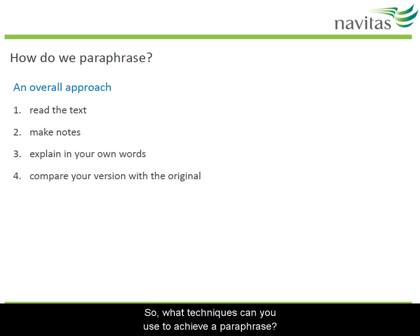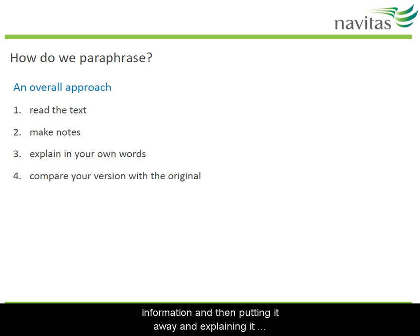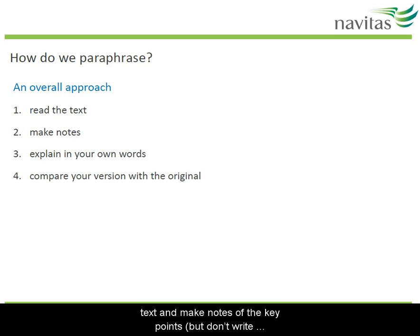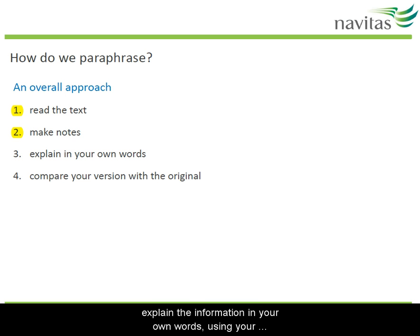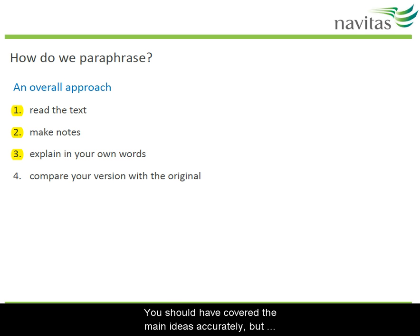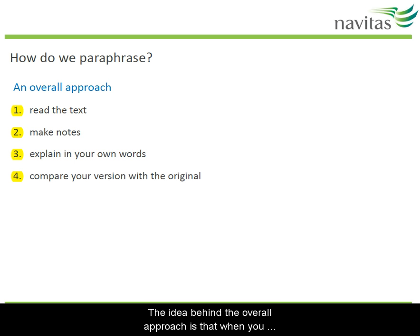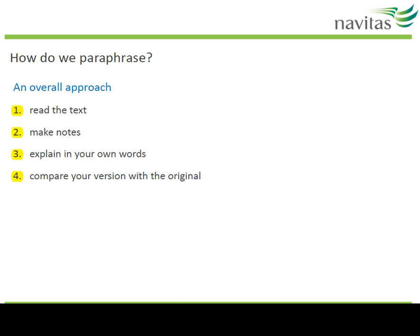So what techniques can you use to achieve a paraphrase? An overall approach is about understanding the information and then putting it away and explaining it yourself. First, read the text and make notes of the key points, but don't write down whole sentences. Then put the text away and explain the information in your own words using your notes as a guide. Then compare your paraphrase with the original text — you should have covered the main ideas accurately, but not explained them in the same words. The idea is that when you don't have the original text in front of you, you can't copy it closely.